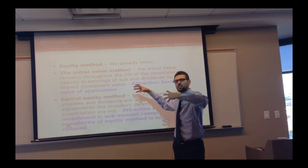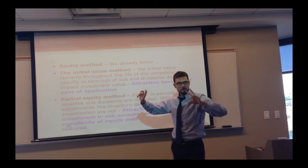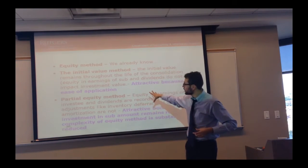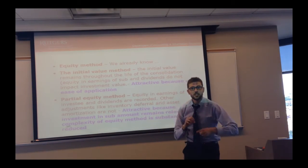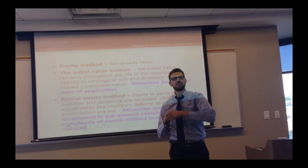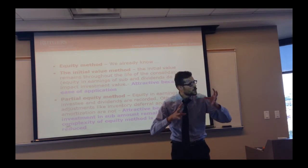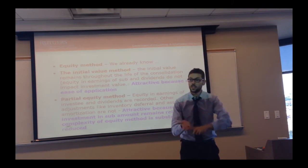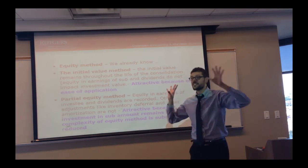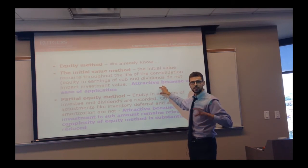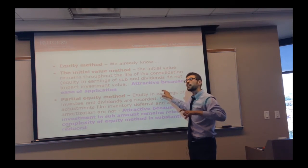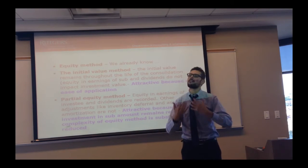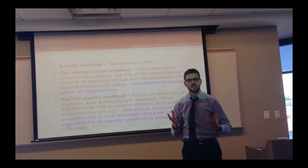This is about how to keep track of your investment in the subsidiary — because the CEO wants to know what we own, how much do we have. The initial value method: say you purchase a gas station for $50 million, you keep the investment in the gas station at $50 million regardless of the equity and earnings of the investee, the dividends, or anything. It's very simple — the initial value method. Simplicity, but we're sacrificing relevancy, because now the gas station has been making a ton of money but we haven't included that in our investment.